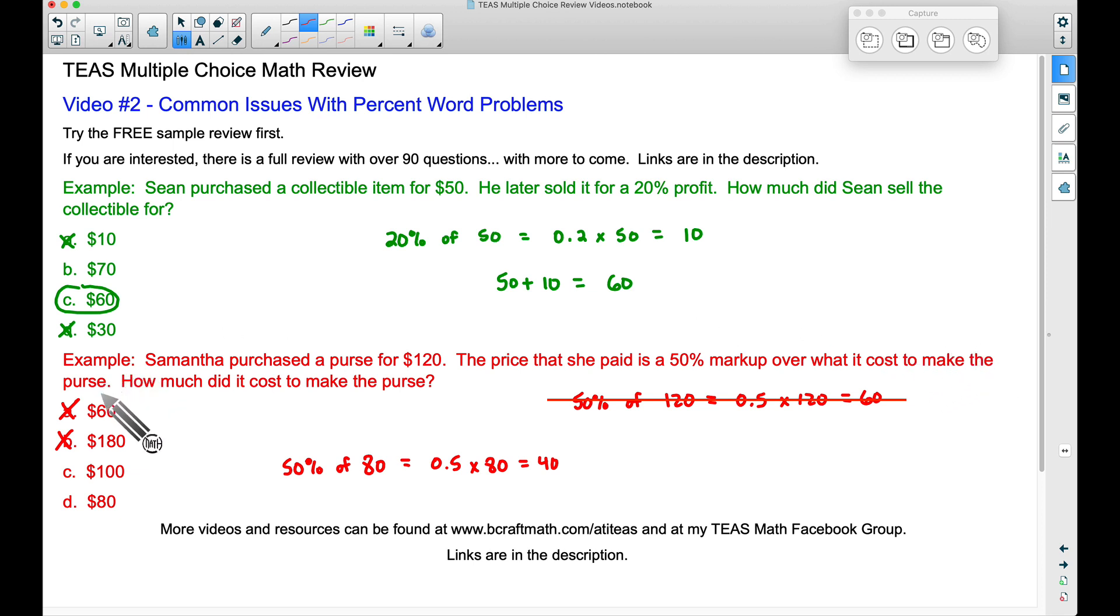Why is that the case? Well I did say suppose it cost 80 bucks to make the purse, they mark it up 50% of that cost, that's that 40, and 80 plus 40 gets us to the 120. Well the 120 is what the purse was sold for.